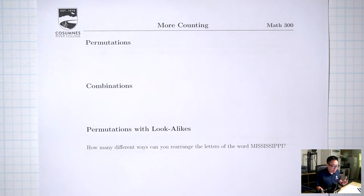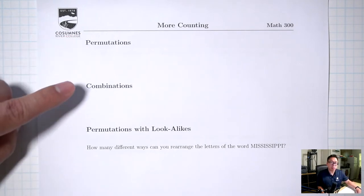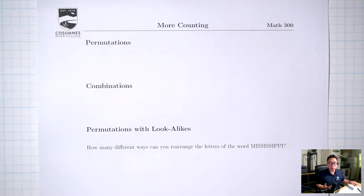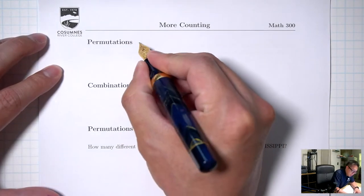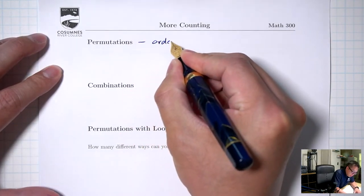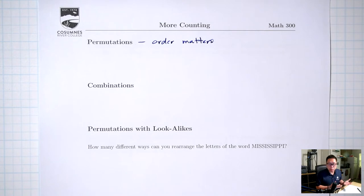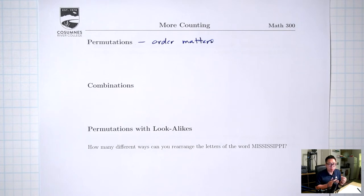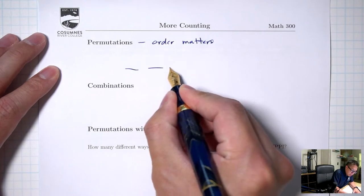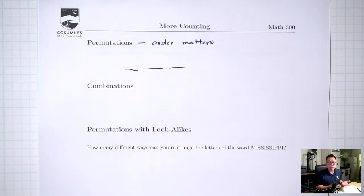Hello, welcome back. In the last lecture, we talked about permutations and combinations. Permutations were situations where the order matters, and examples of these were license plates, passwords, rearranging people in line for a photograph, and picking people for special jobs — for example, picking people for president, vice president, secretary. For permutations, you first figure out how many blanks you need, and then for each blank, count how many options you have.